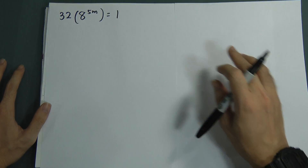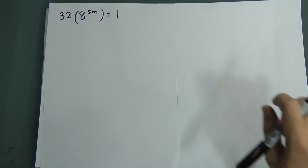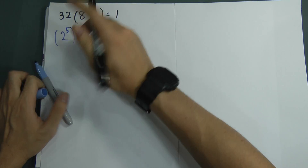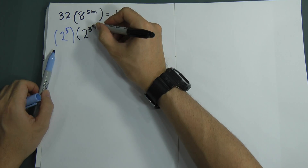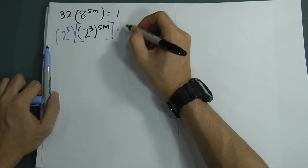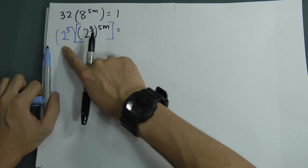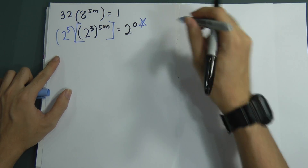This is one of the famous partial questions for indices. A lot of students, when they see 32 or 64, do not know that these are related to 2. So now I hope you can see — this 32 is 2 to the power of 5. I'm going to change 32 to 2 to the power of 5, put a bracket. And 8 is 2 to the power of 3, and then we have 5m. So this one we have to multiply 5m. Do you see this? And then it goes to 1. You must know that any number to the power of 0 gives you 1 — unless 0 to the power of 0.